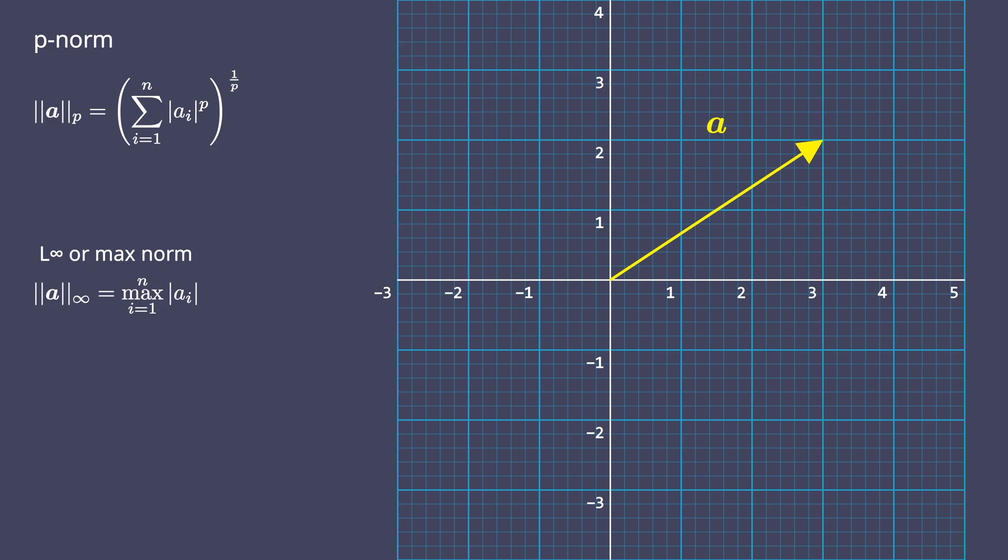You might ask, how did anyone substitute infinity into the equation and derived the max norm equation? Well, you just calculate the limit of the equation as N approaches infinity. Turns out it is just the max element of the vector.